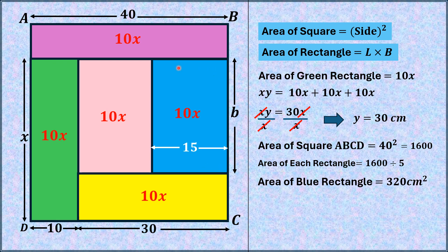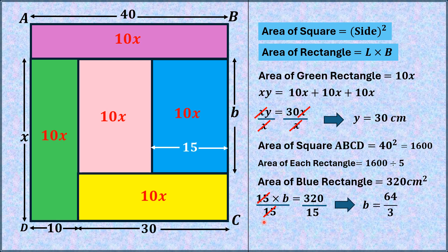The area of the blue shaded rectangle is equal to 15 times B, which equals 320 cm². So 15B = 320. Dividing both sides by 15, B = 64/3, and using a calculator, B = 21.3333 cm. That is the answer.